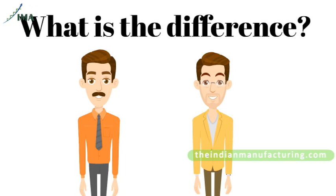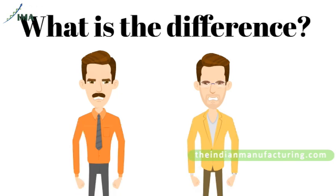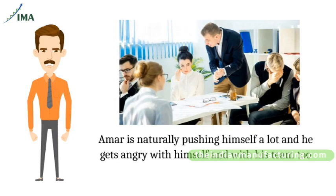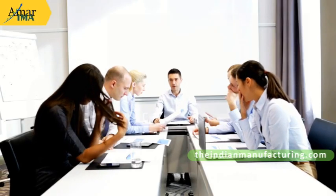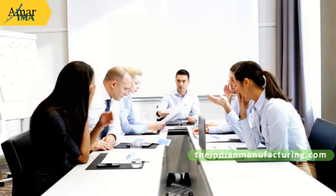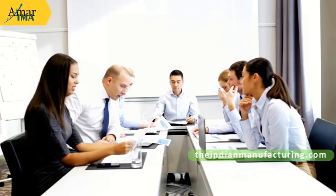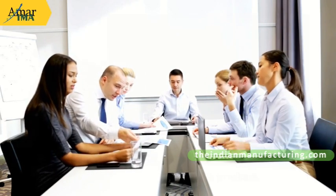What is the difference between Amar and Sanu? Both keep getting angry. Amar is naturally pushing himself a lot, and he gets angry with himself and with his team too. Sanu's anger is more strategic — he does not apply the standards to himself, but he applies the standards to others. In case of Amar, even though the team members suffer due to his anger, they may accept his proddings as he expects the high standards from himself too.